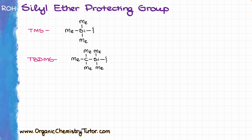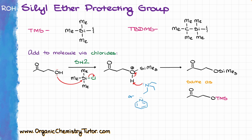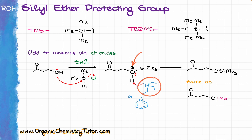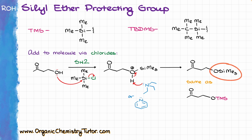The first question is how do we apply our protecting group onto the molecule? In the case of silyl ethers, we use the corresponding chloride. So if I wanted to add TMS, I would use trimethylsilyl chloride in pyridine or triethylamine as a solvent. The mechanism is fairly straightforward — this is an SN2-style reaction where the alcohol displaces chlorine from the silicon, giving a protonated intermediate, and then we use triethylamine or pyridine as a base to deprotonate the molecule and give us the neutral product. We can write out the trimethylsilyl group in full, or abbreviate it as TMS.